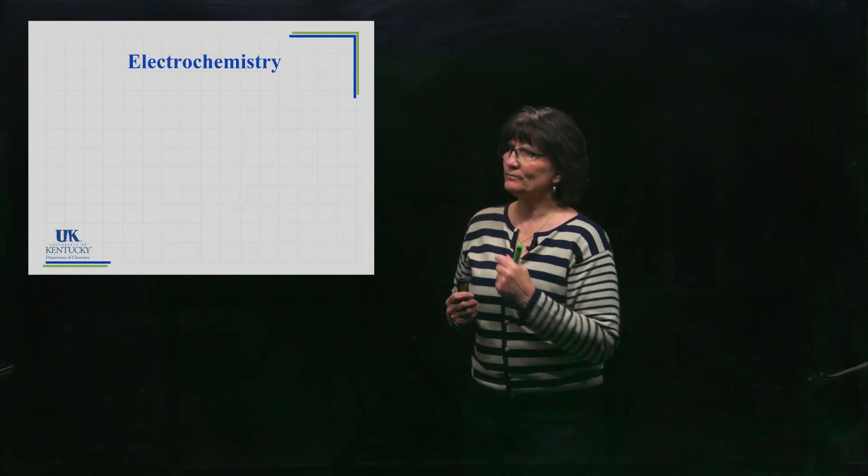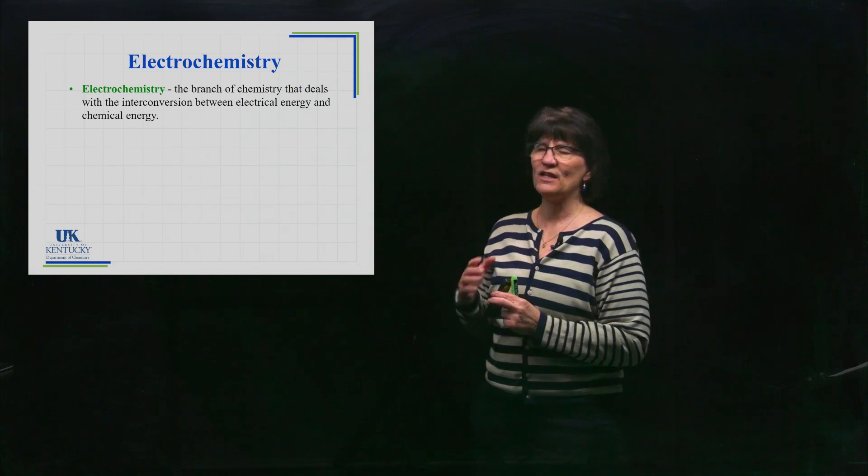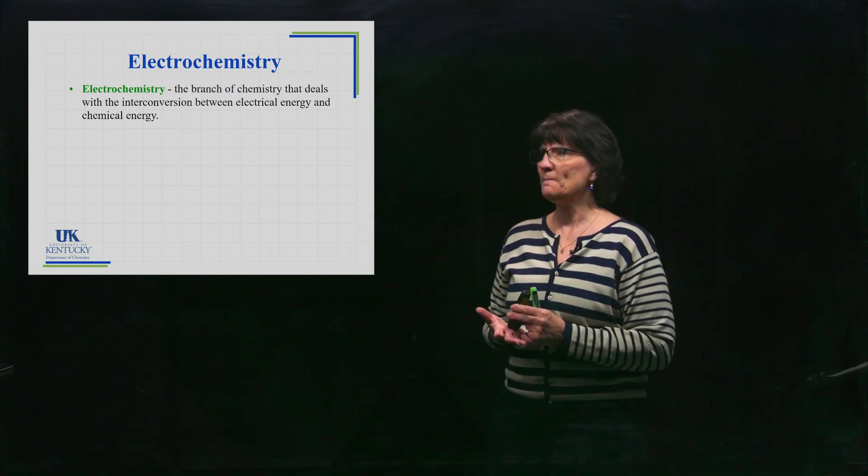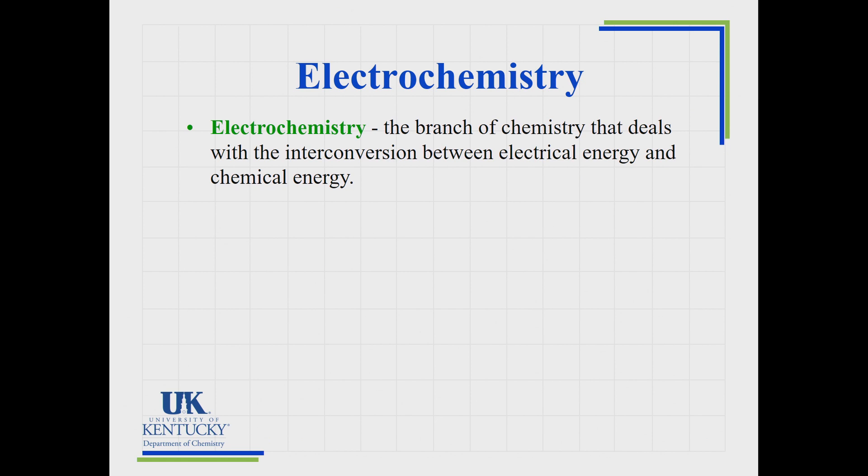Here's the formal definition of electrochemistry: it's a branch of chemistry that deals with the interconversion between electrical energy and chemical energy. We know chemical energy is the energy stored within the bonds and electrical energy is the flowing of electrons through, let's say, a wire.